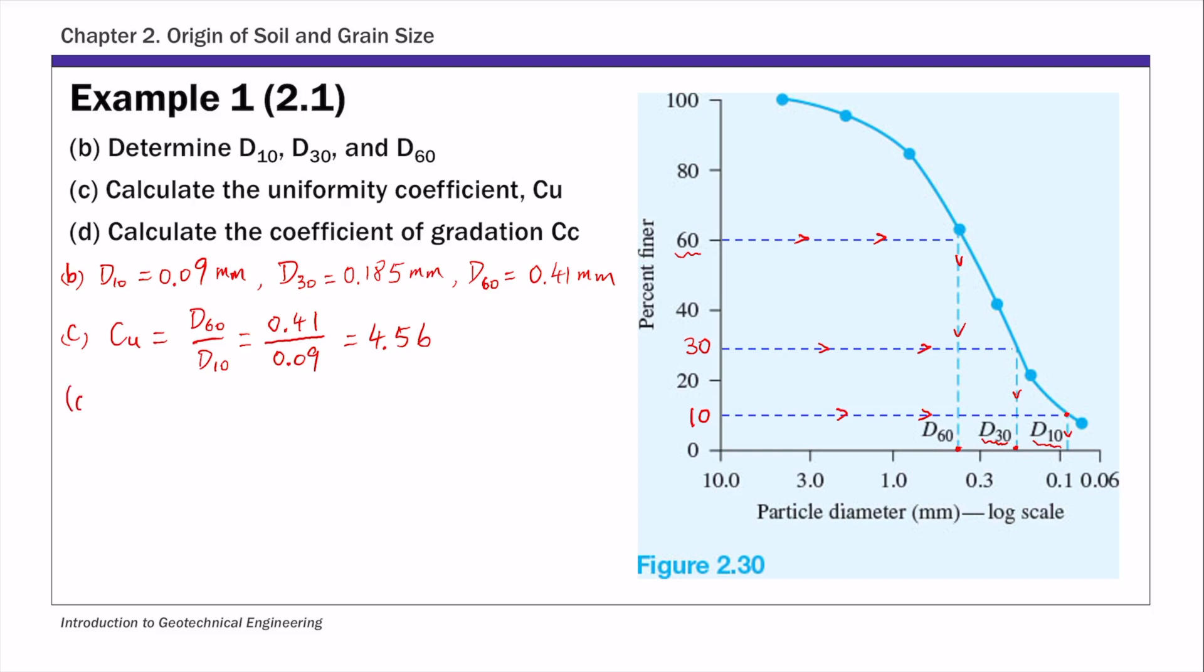And then for the coefficient of gradation, c sub c, by definition is d30 squared over d60 times d10. And simply substitute the numbers, the values we read from part b. So that's 0.185 for d30 squared over d60 is 0.41, multiply by 0.09, that's d10. And if you work out the math, this is 0.93.